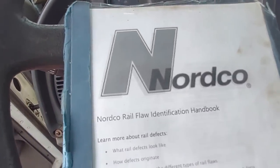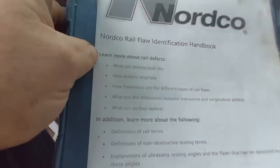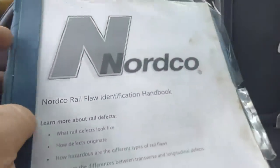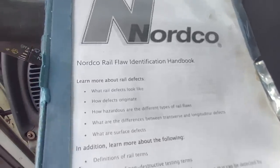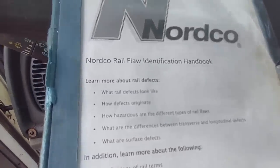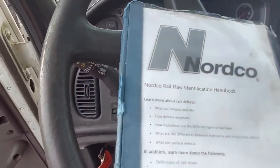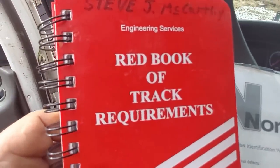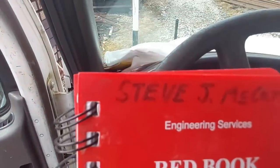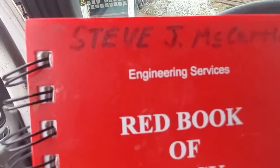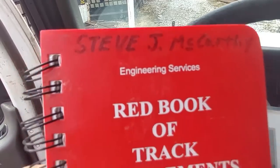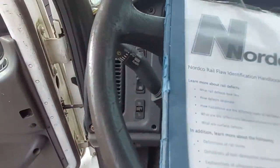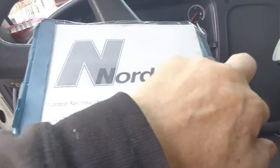This is the Nordco Rail Flaw Identification Handbook — what Nordco operators carry with them. There are actually four books I carry with me in my lunchbox all the time: this one, my Track Safety Standards book, my Sperry book, and my red book of track requirements that my good friend Steve McCarthy gave me — link in the description to watch his channel. This particular handbook is from Canadian Pacific.